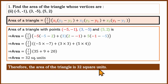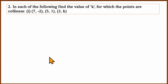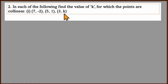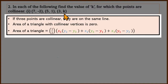The area of the triangle is 32 square units. We substitute the formula value and simplify. Here is the next question — an interesting one. Find the value of k for which the points are collinear. Collinear means the points are on the same line.